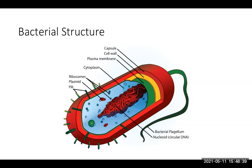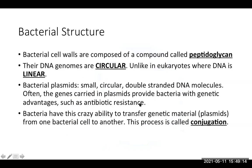The nucleoid region is where the genome is — the main source of genetic material and the one chromosome that encodes for all their essential proteins. Plasmids aren't really part of that; they serve a different role. They give bacteria certain genetic advantages, and one primary example of that is antibiotic resistance. Bacteria have antibiotic resistance genes encoded in certain plasmids. In addition to that, they have this unique ability —